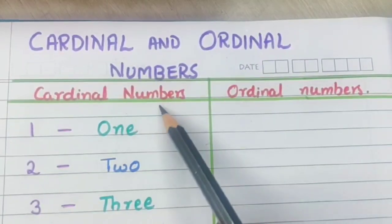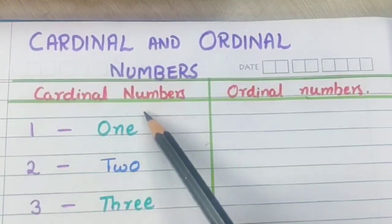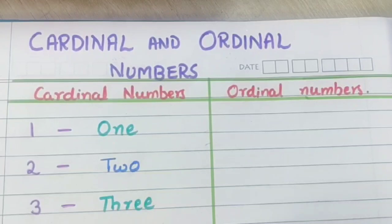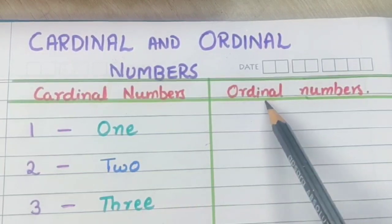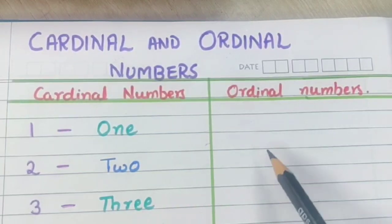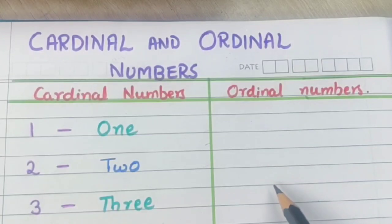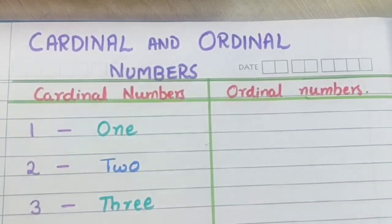Now children, cardinal numbers you have already studied — 1 to 10, you already know this. Now let us see how to write the ordinal numbers. So let's start, children.